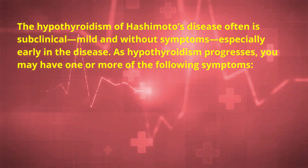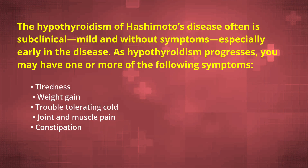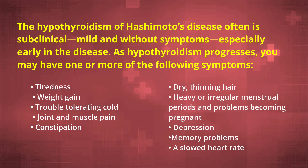The hypothyroidism of Hashimoto's disease often is subclinical — mild and without symptoms, especially early in the disease. As hypothyroidism progresses, you may have one or more of the following symptoms: tiredness, weight gain, trouble tolerating cold, joint and muscle pain, constipation, dry and thinning hair, heavy or irregular menstrual periods and problems becoming pregnant, depression, memory problems, and a slowed heart rate.